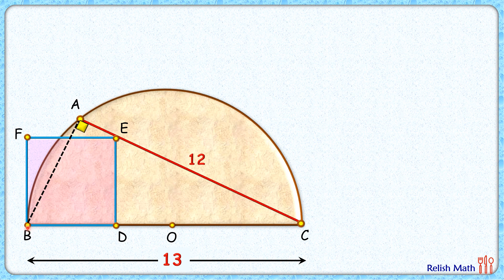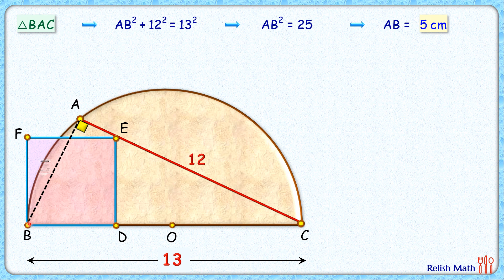Now in this triangle BAC let's apply Pythagoras theorem. So we'll get AB² + 12² equals the hypotenuse squared or 13². Solving it we'll get AB² = 25 and AB = 5 cm. So this length AB is 5 cm.